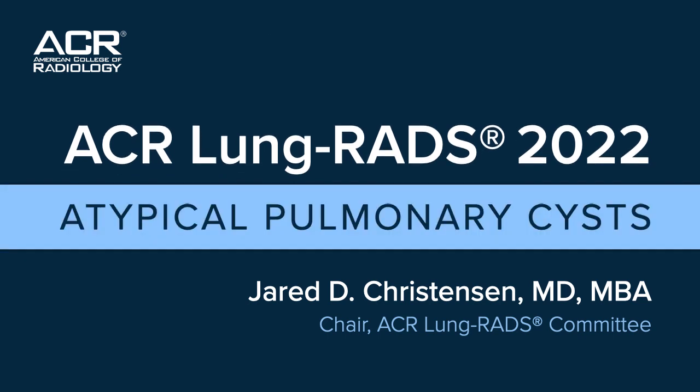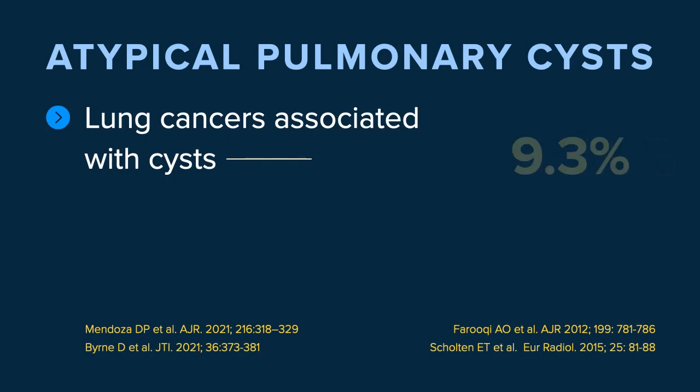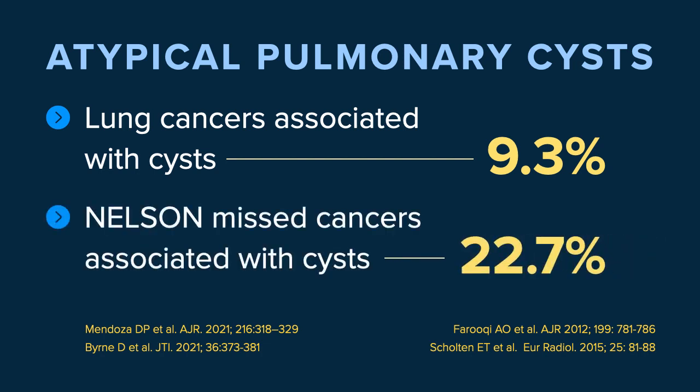In this presentation, we'll be focusing on atypical pulmonary cysts. Lung cancer presenting in association with cystic airspaces is rare, but we do encounter it in clinical practice. There's a reported incidence of anywhere from one to nine percent in the literature. However, the precise incidence in the screening population has not yet been quantified, and many cases are initially not recognized as malignant. For example, a retrospective analysis from the Nelson trial found that of lung cancers missed on initial screening, approximately 23 percent were associated with cystic lesions.